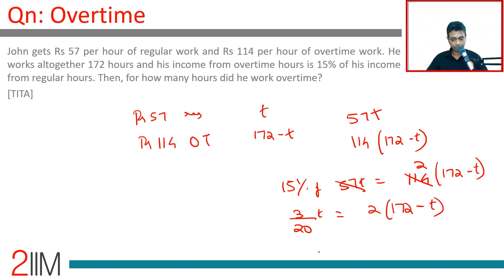3t equals 40 times 172 minus t. Expanding: 3t plus 40t equals 40 into 172.